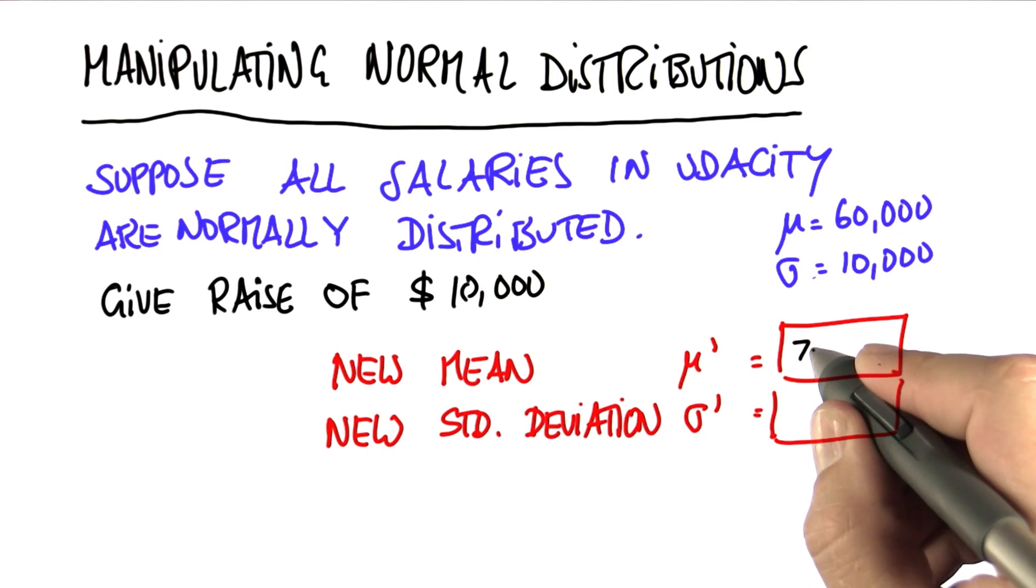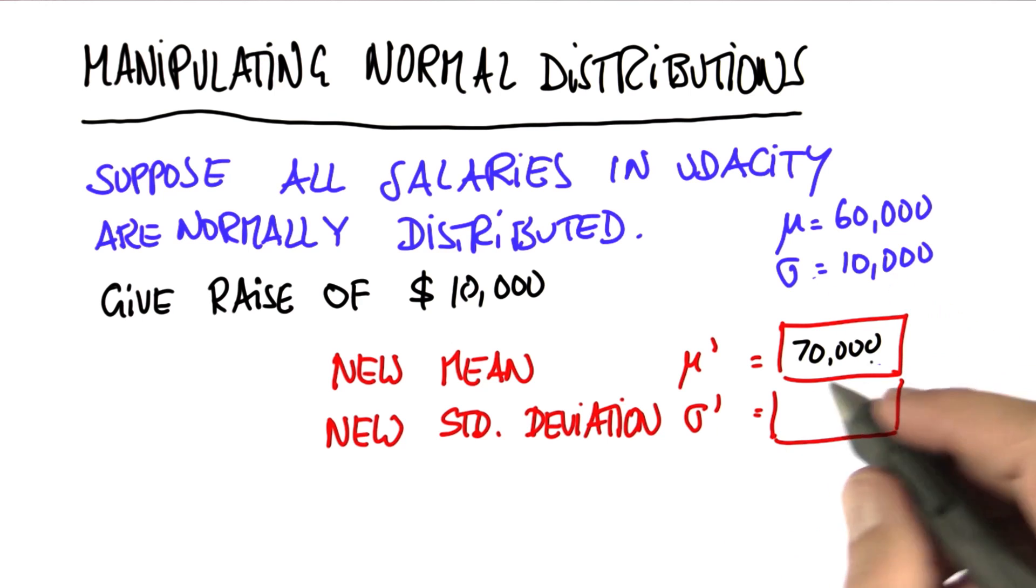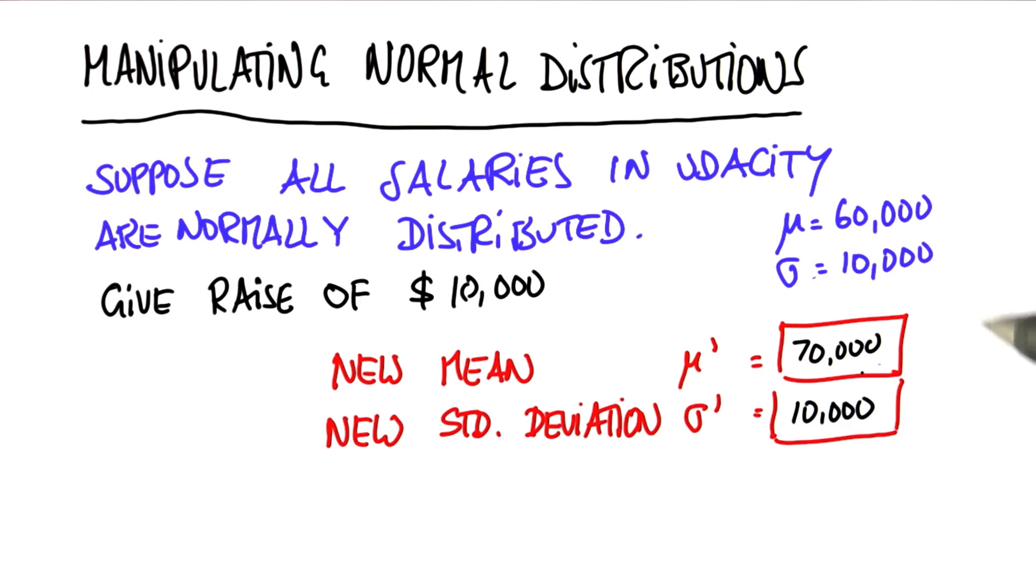And the answer for the new mean is 70,000. Obviously, everyone's salary increased. And the new sigma stays the same. We already talked about this example earlier in class, but now it's in the context of a normal distribution. So let me take a second to show this to you.